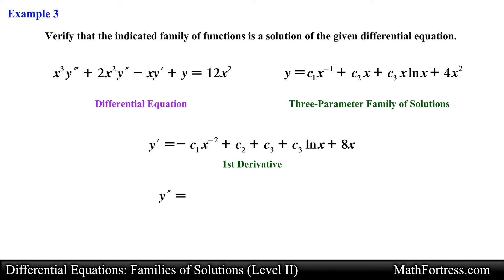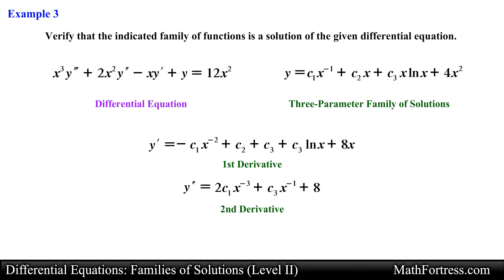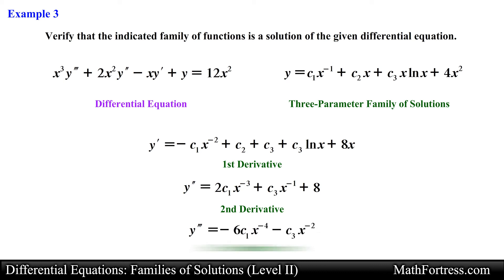Next let's proceed with finding the second derivative. We once again take the derivative term by term, applying the power rule and the derivative of the natural logarithm. Doing that we obtain the following expression. Lastly, we need to find the third derivative, proceeding term by term and applying the power rule. This results in the following expression for the third derivative.